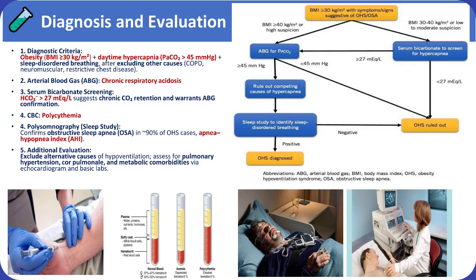Polysomnography confirms coexisting obstructive sleep apnea in most cases, and complete blood count may reveal polycythemia due to chronic hypoxemia. Additional evaluation should include echocardiography and basic laboratory studies to assess for pulmonary hypertension, right heart failure, and metabolic comorbidities.